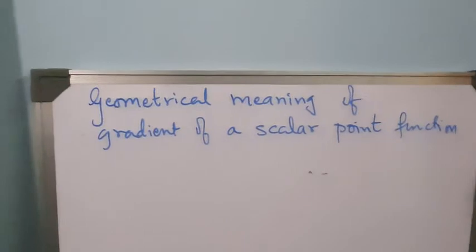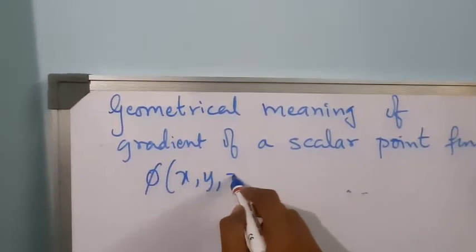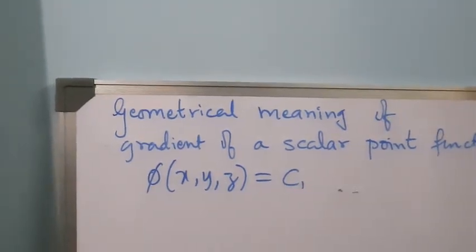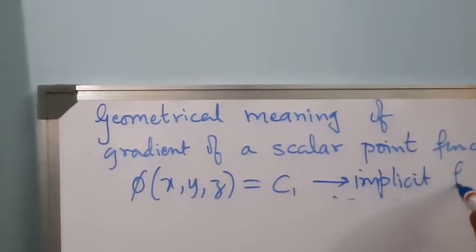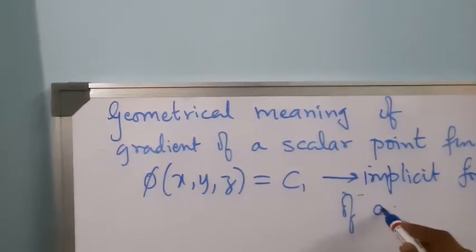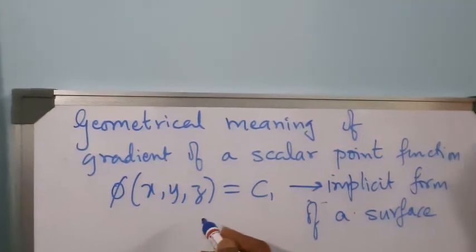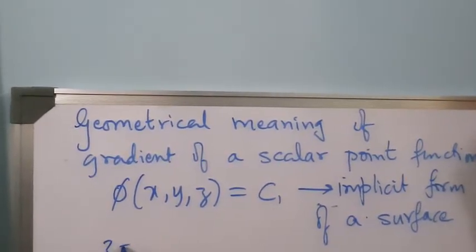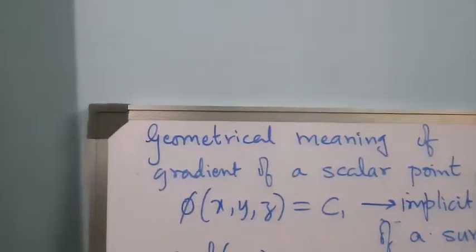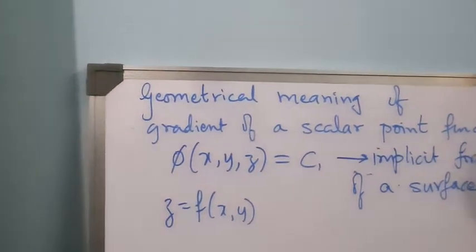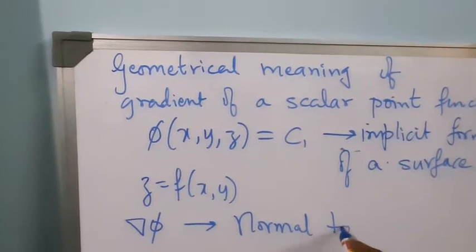The question is: what would be the geometrical meaning of gradient of a scalar point function? If we have a scalar point function φ(x, y, z) equal to a constant c1, this is an implicit form of representing a surface. In some cases we can obtain an expression z = f(x, y) by rearranging, but in most cases this is the implicit representation of a surface. Gradient φ in fact represents the normal to the surface.